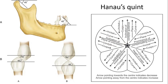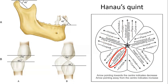Let's talk about compensating curves. Before discussing compensating curves, we have to learn about Hanao's quint. Hanao's quint has five major components: first is inclination of condylar guidance, inclination of plane of orientation, inclination of incisor guidance, height of cusp, and fifth is compensating curve.